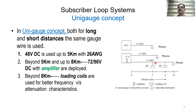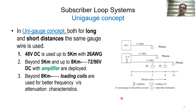With loading coils, coverage can be extended to up to 98 percent of subscribers in the area. The gauge of the wire is common in all three scenarios — if you are using 26 AWG for 5 kilometers, the same gauge is used for 8 kilometers and for 10 kilometers as well. This is the uni-gauge concept.